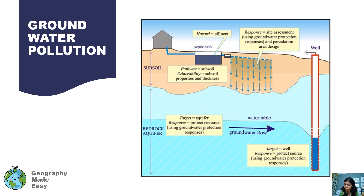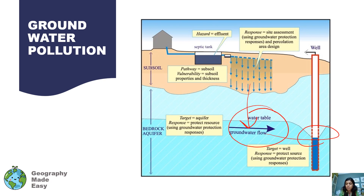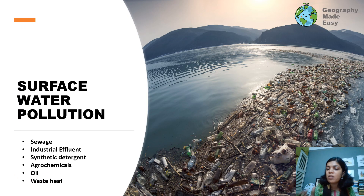Water pollution can be of two types. First, groundwater pollution, where the pollution is not just affecting surface water but has seeped down to the water table and is affecting wells. Groundwater is one of the purest forms of water because it passes through layers and gets filtered, and takes millions of years to accumulate and form an aquifer. This water is also at risk from different sources of pollution. We also have surface water pollution, which is much more visible.